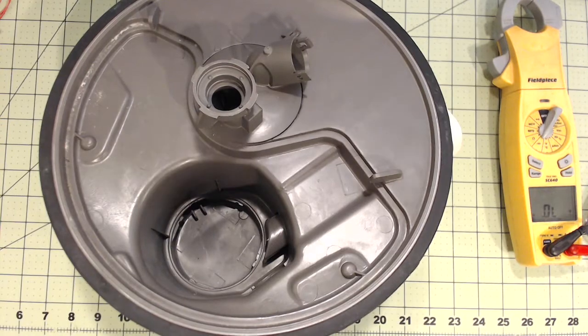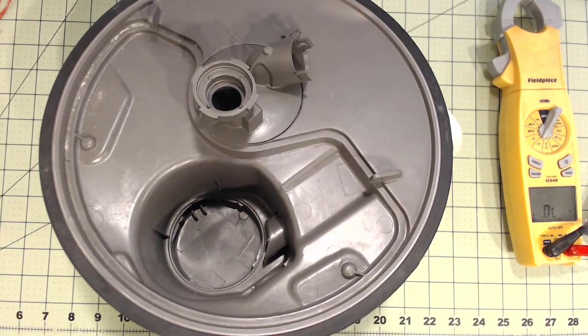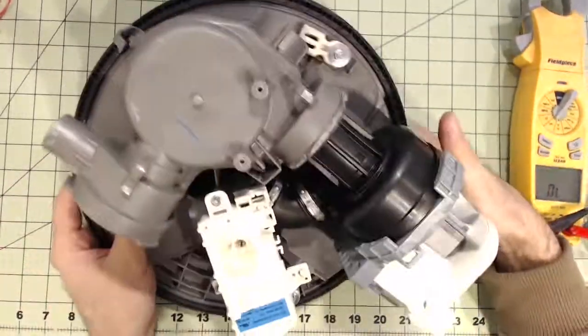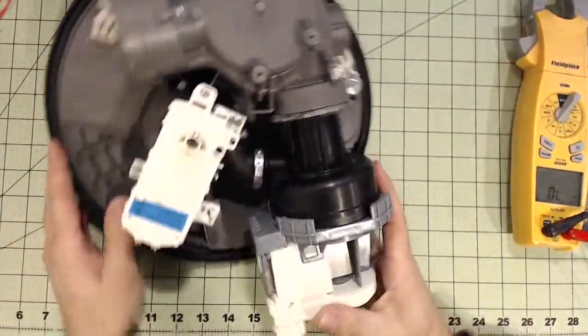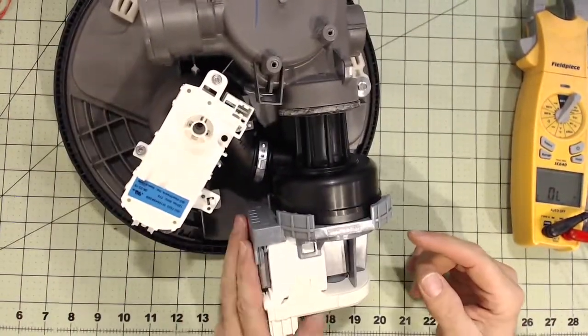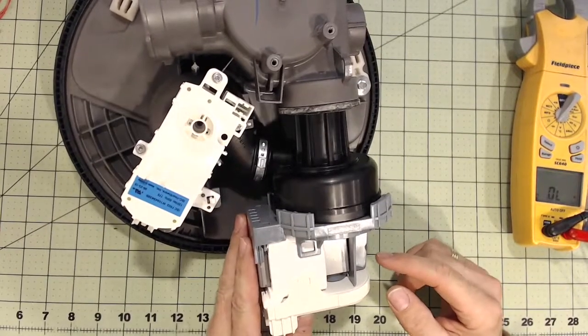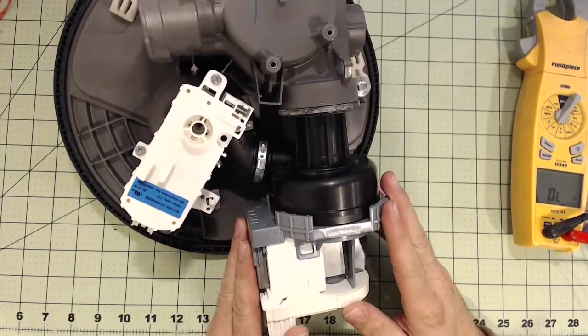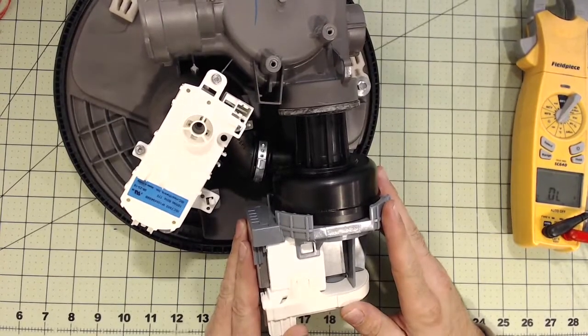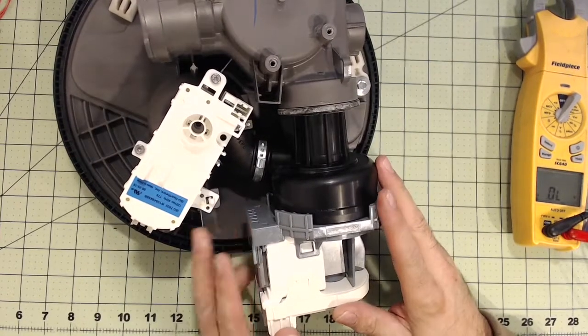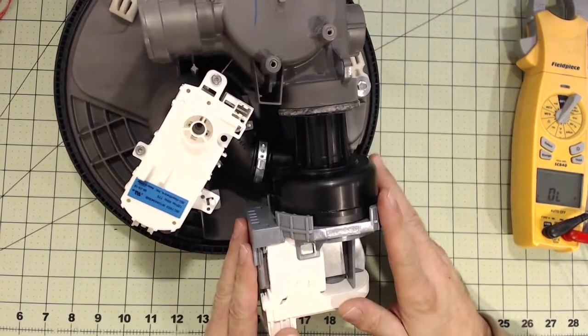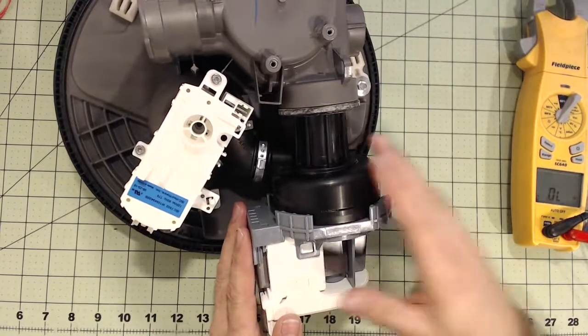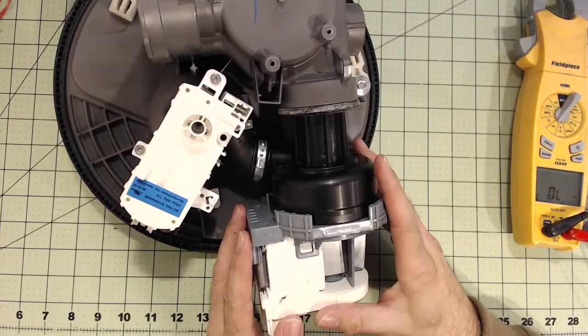All right, what I got here is a sump for a Whirlpool dishwasher. It's a global wash dishwasher system. And what I'm going to show you here is what I found when I diagnosed the dishwasher is that 120 volts was coming out of the control board. I used my low Z to confirm it was good voltage, and it was. So I knew that the motor was defective, and the price of the motor is pretty much the price of the sump, so I just replaced the whole sump.